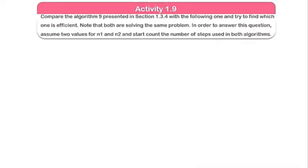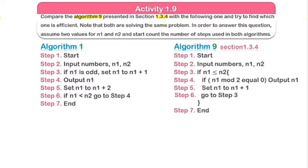There is an algorithm — you have to check algorithm number nine. First you have to write algorithm nine and compare algorithm one with algorithm nine to see which algorithm is more efficient. Basically, what this algorithm does is: you enter two numbers, number one and number two — number one is the starting point, number two is the ending point — and you find out the numbers which are even.